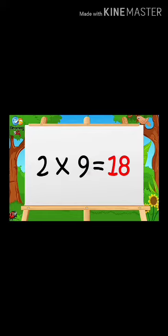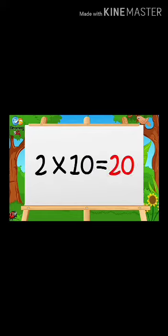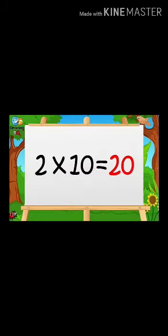Two nines are eighteen. Two nines are eighteen. Two tens are twenty. Two tens are twenty.